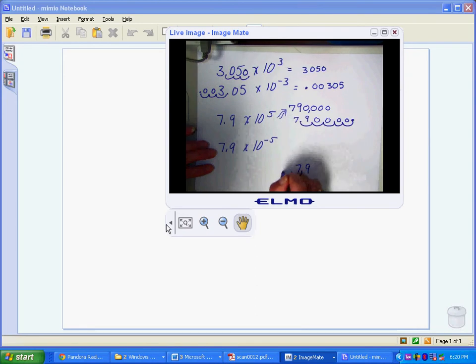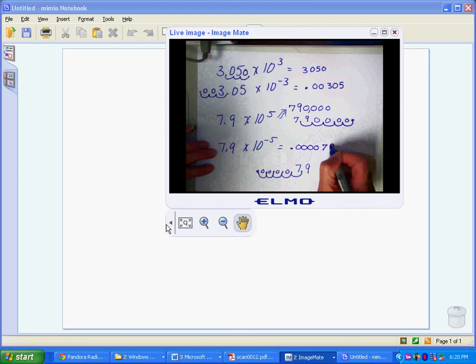1, 2, 3, 4, 5. So this number is equal to four zeros then 79. Okay.